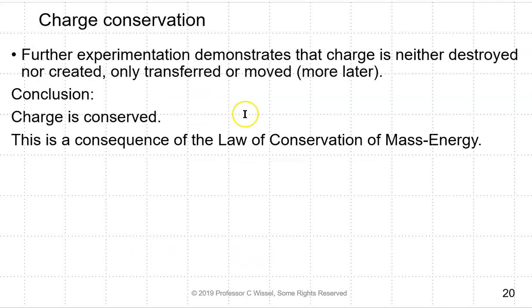If we do more experimentation, we will demonstrate the charges are neither created nor destroyed, only transferred and moved. We'll talk more about that later. The conclusion: charge is conserved. This is a consequence of the law of conservation of mass energy. Charges have mass and energy, and mass and energy are basically two versions of the same thing. E equals MC squared.